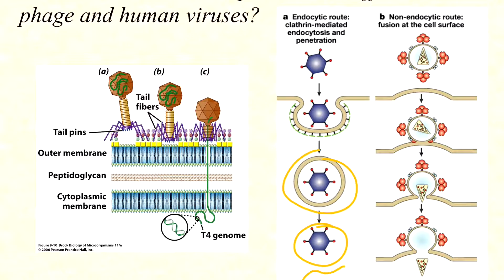With a naked human virus, the entire nucleocapsid — the combination of nucleic acid and capsid — is brought in. In an enveloped human virus, the envelope fuses to the membrane, the nucleocapsid enters, and then it needs to be uncoated to expose the nucleic acid. So we've either got membrane fusion in an enveloped virus or endocytosis in a naked virus.